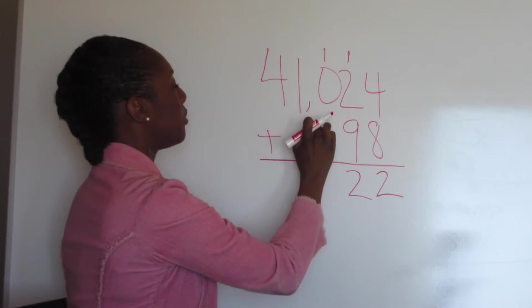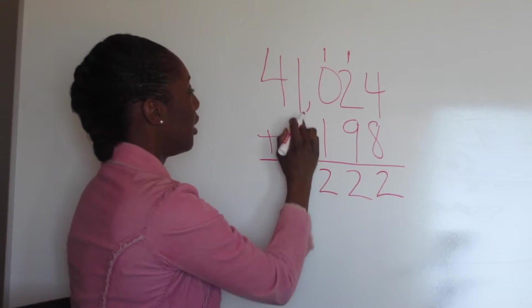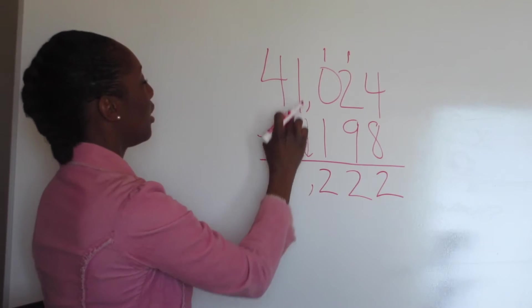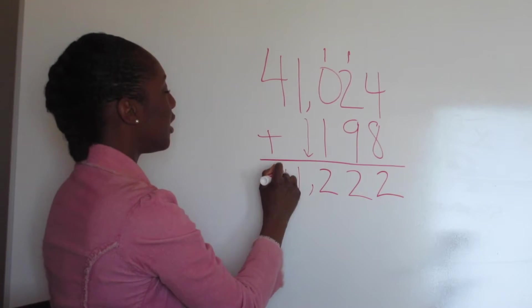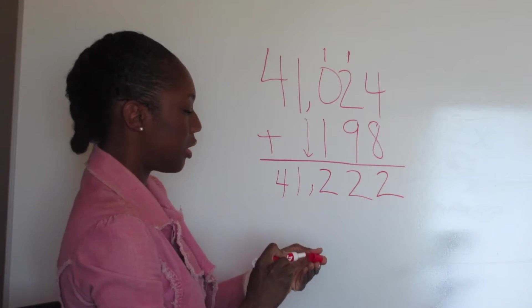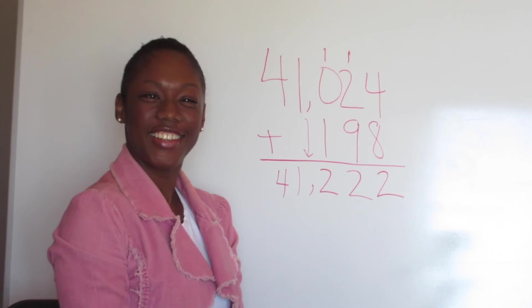Now we have 1 plus 1 is 2. Bring the comma down. 1 plus nothing is 1. 4 plus nothing is 4. So 41,222.